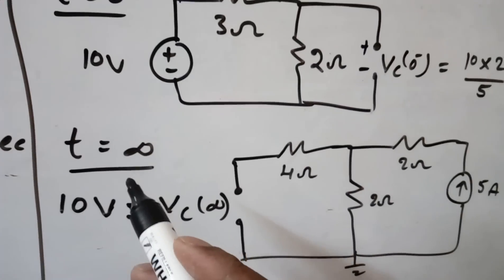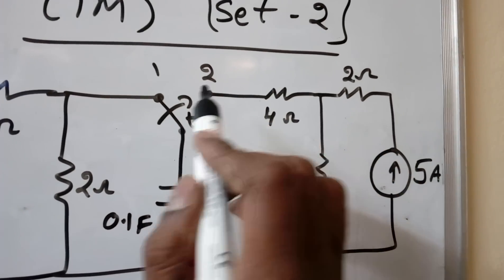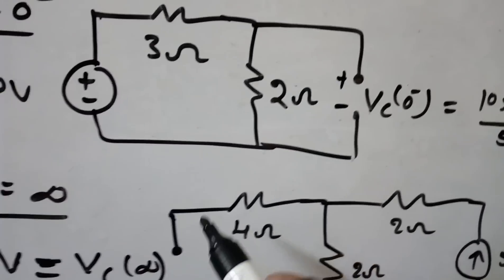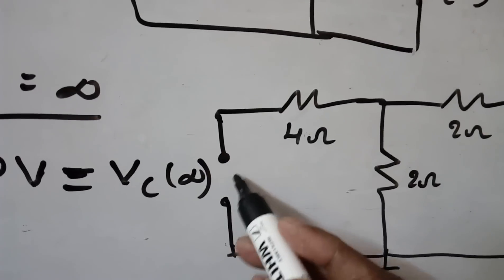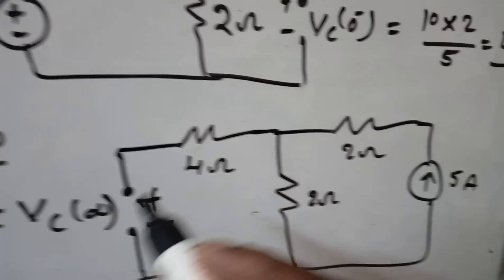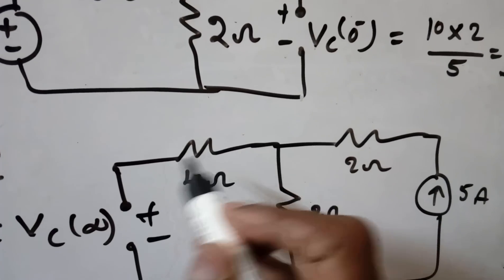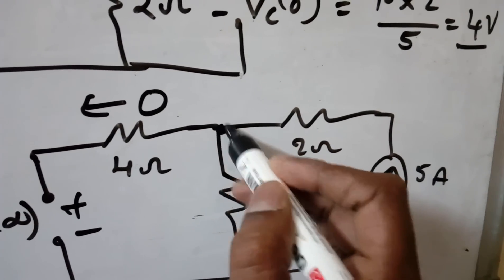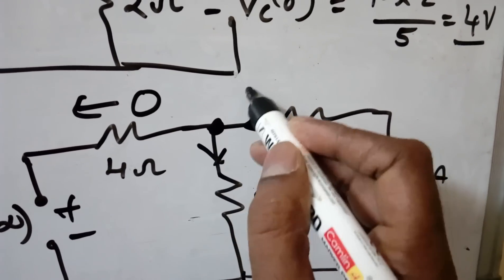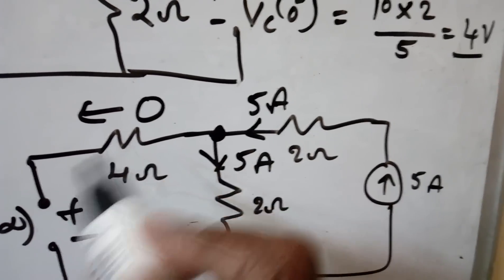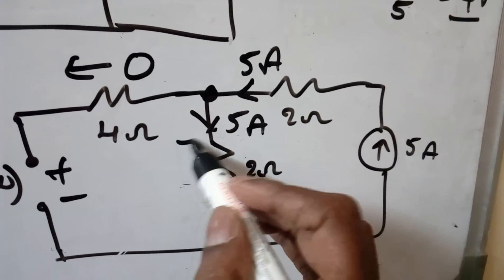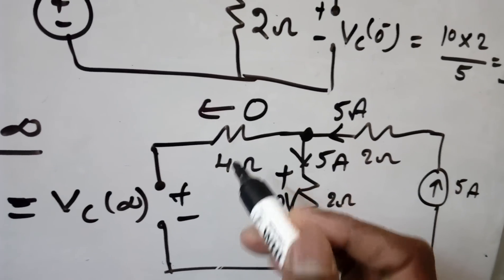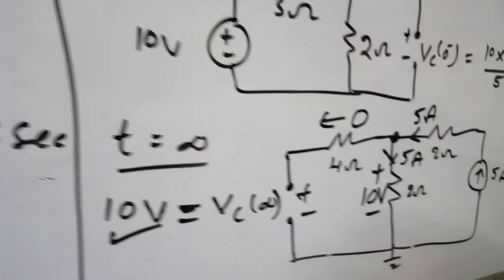At t equal to infinity, the switch is at position 2 and the 5-ampere source is connected. Again the capacitor reaches steady state and is an open circuit. The current through the capacitor branch is zero. By KCL, 5 amperes flows through the 2 ohm resistor, giving a voltage of 5 × 2 = 10 volts. So VC(∞) = 10 volts.